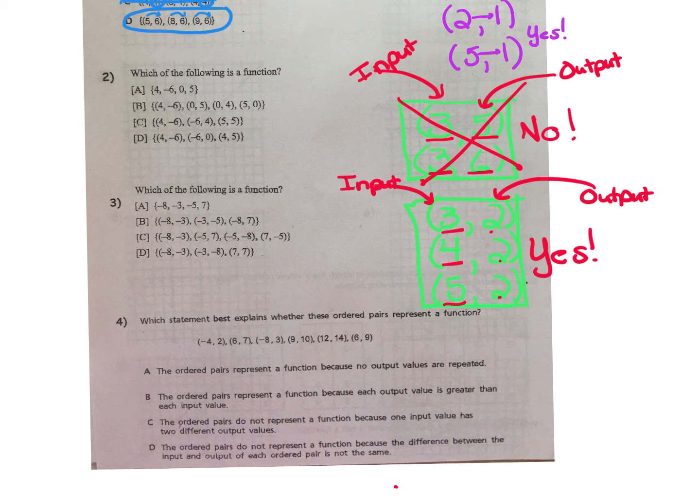For number 2, it asks, which of the following is a function? Letter A is just a set of values. And as we look at the ordered pairs in B, C, and D, we see that a few of these have issues. For example, an input of 0 has an output of 5. And next to that, an input of 0 has an output of 4. We are not allowed to have two different output values with the input value of 0. So that's not a function.